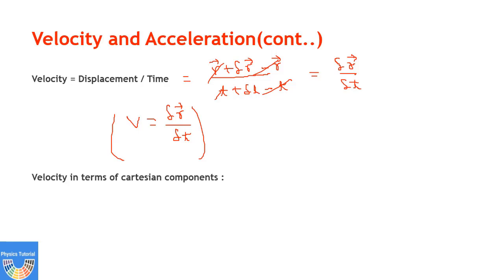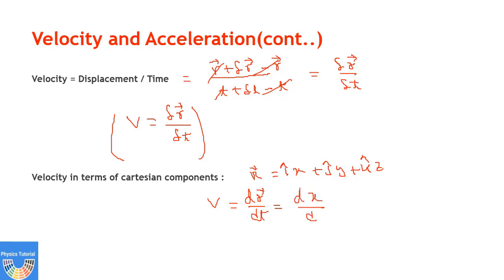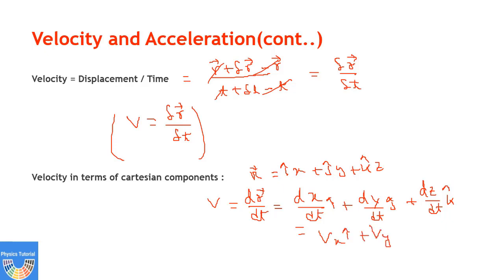We can also express this velocity in Cartesian coordinates. The position vector is r = x i-cap + y j-cap + z k-cap. So velocity v = dr/dt = (dx/dt) i-cap + (dy/dt) j-cap + (dz/dt) k-cap, which can also be written as vx i-cap + vy j-cap + vz k-cap. This is velocity in Cartesian coordinates.